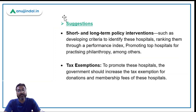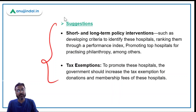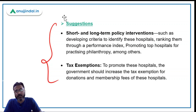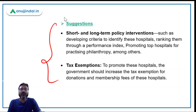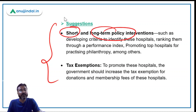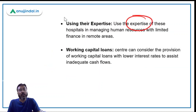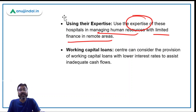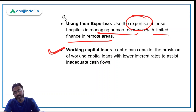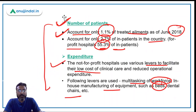Suggestions for improving not-for-profit hospitals include short and long-term policy interventions. Taxes on donations should be exempted by the government. The expertise of these hospitals in managing human resources with limited finances in remote areas should be utilized. They should be provided with working capital loans at lower interest rates to manage their operating expenses.